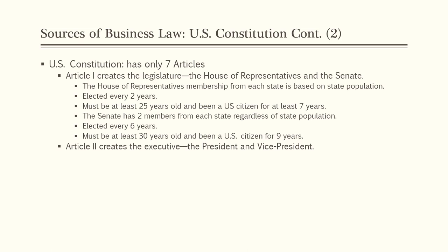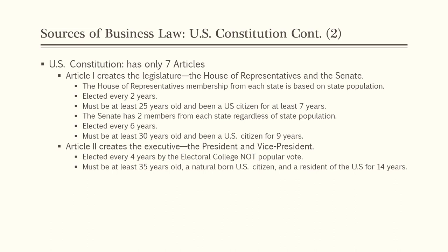Article II creates the executive — the president and vice president. The president is elected every four years by the electoral college, not by popular vote. You must be at least 35 years old and a natural born U.S. citizen to serve as president. That's why Arnold Schwarzenegger, although he has been governor of California, has never been able to run for president — because he is not a natural born U.S. citizen.